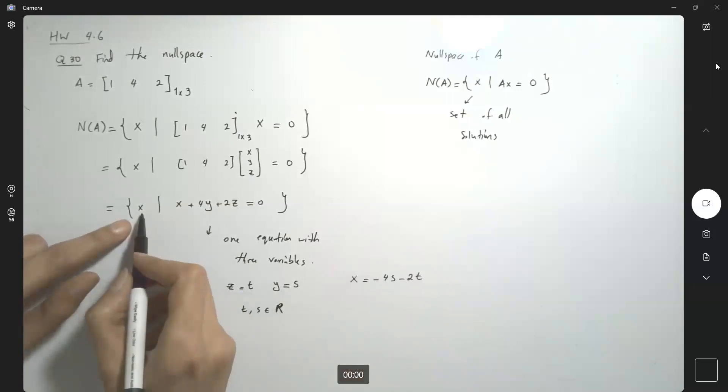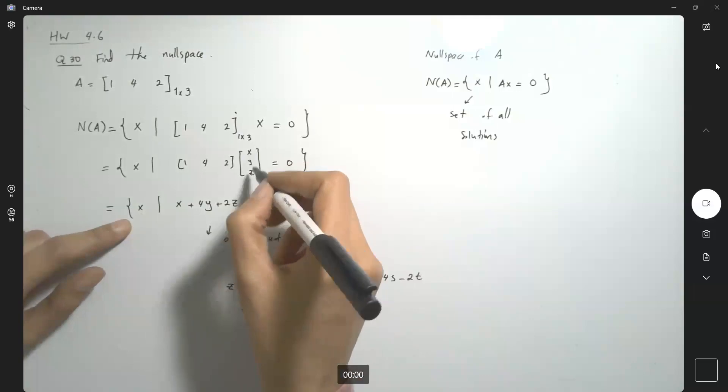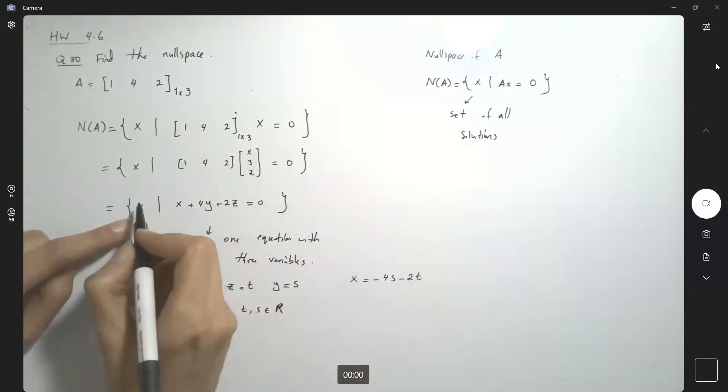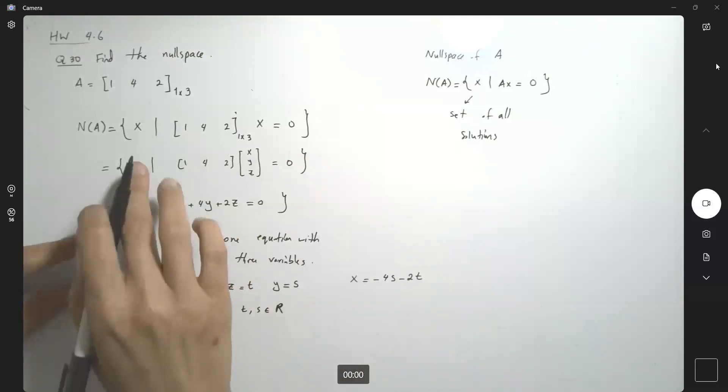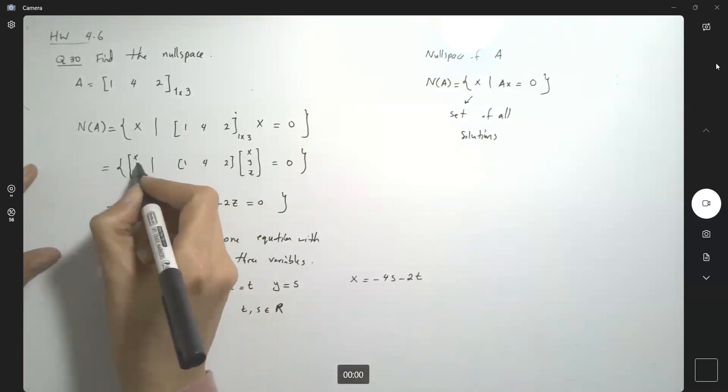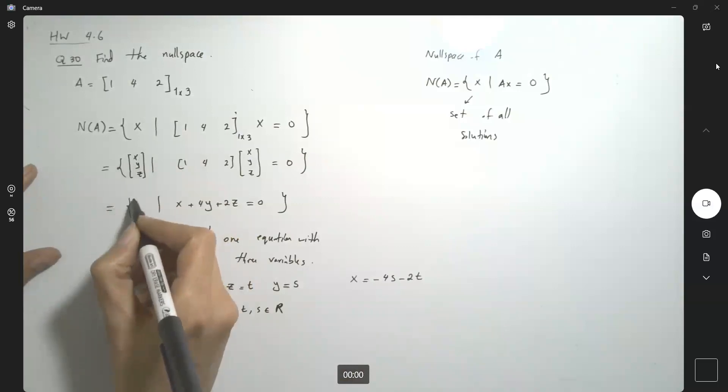This x basically is the column (x, y, z). So this x and this x are different. Let me write it this way to avoid any confusion for you in the future.